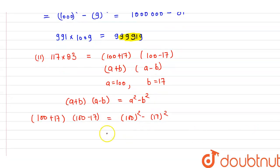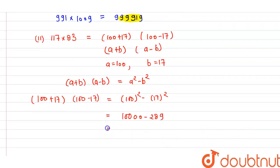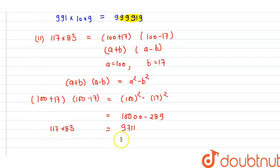Further simplifying: 100 squared is 10000 and 17 squared is 289. So 10000 minus 289 gives us 9711. This is the value of 117 into 83 using the identity. This is our answer.